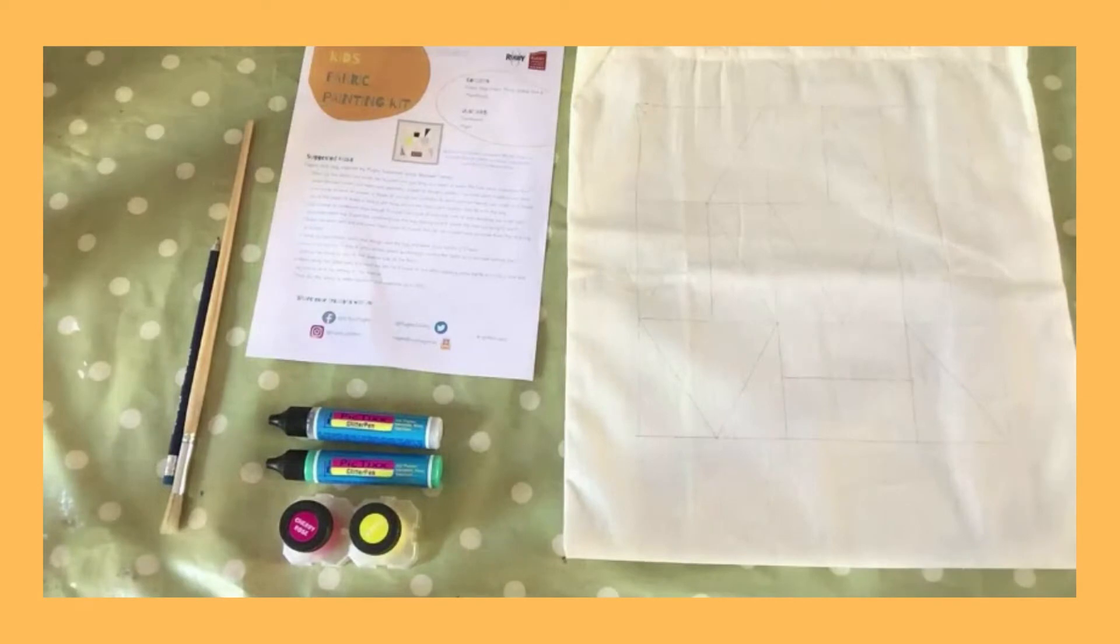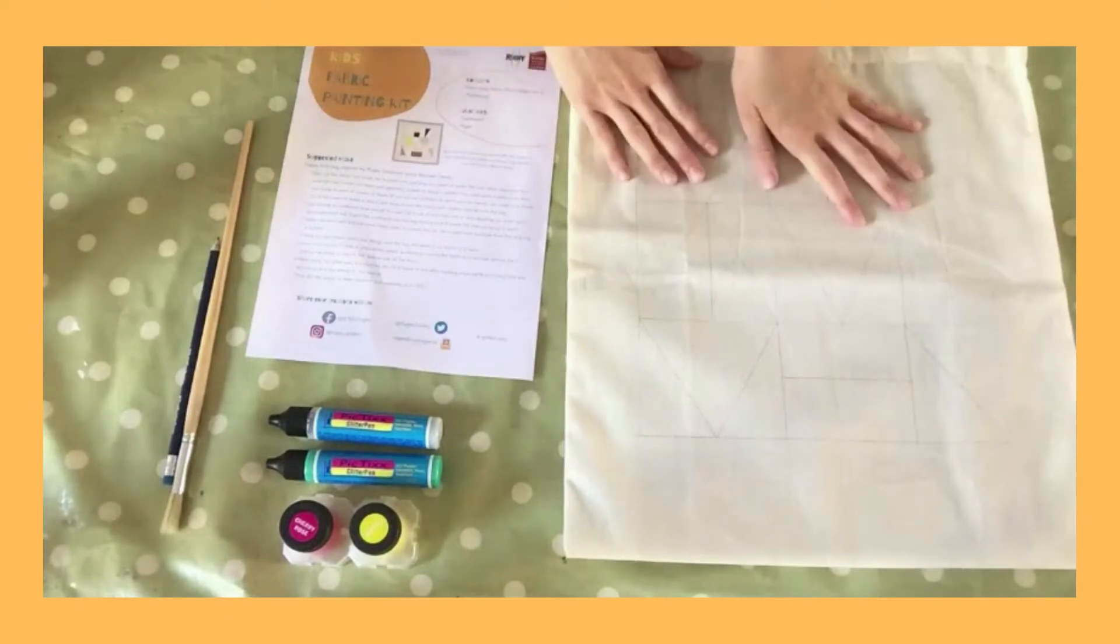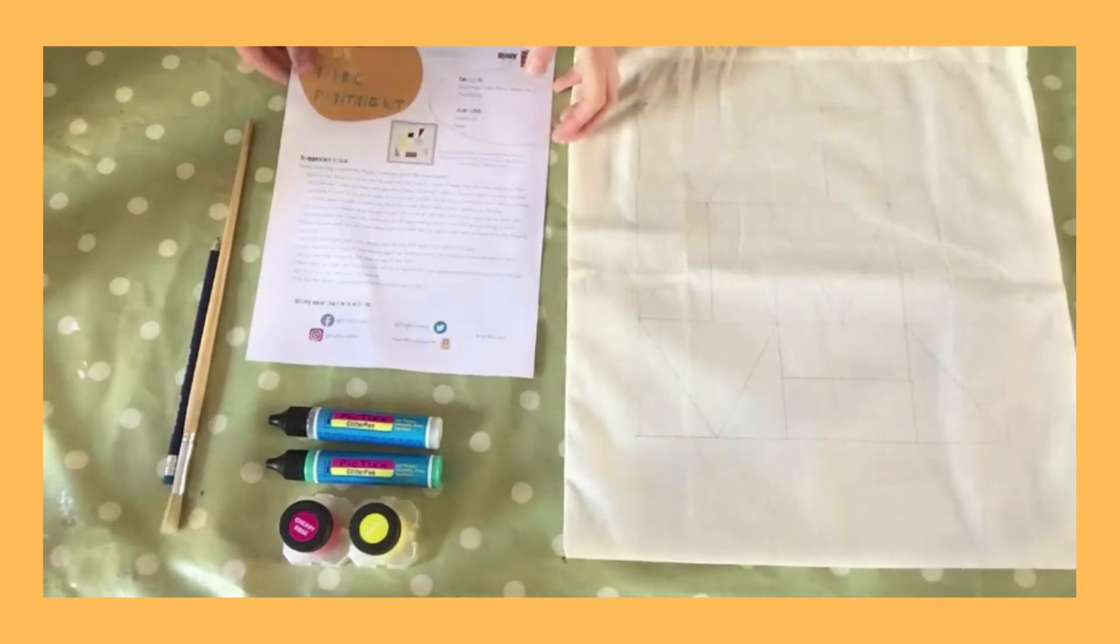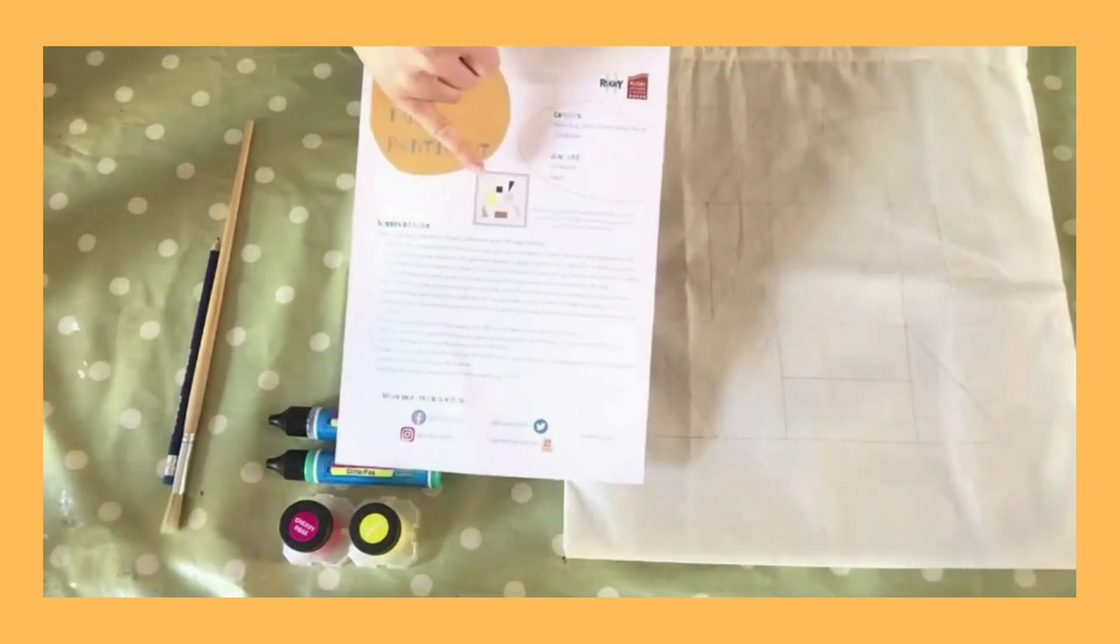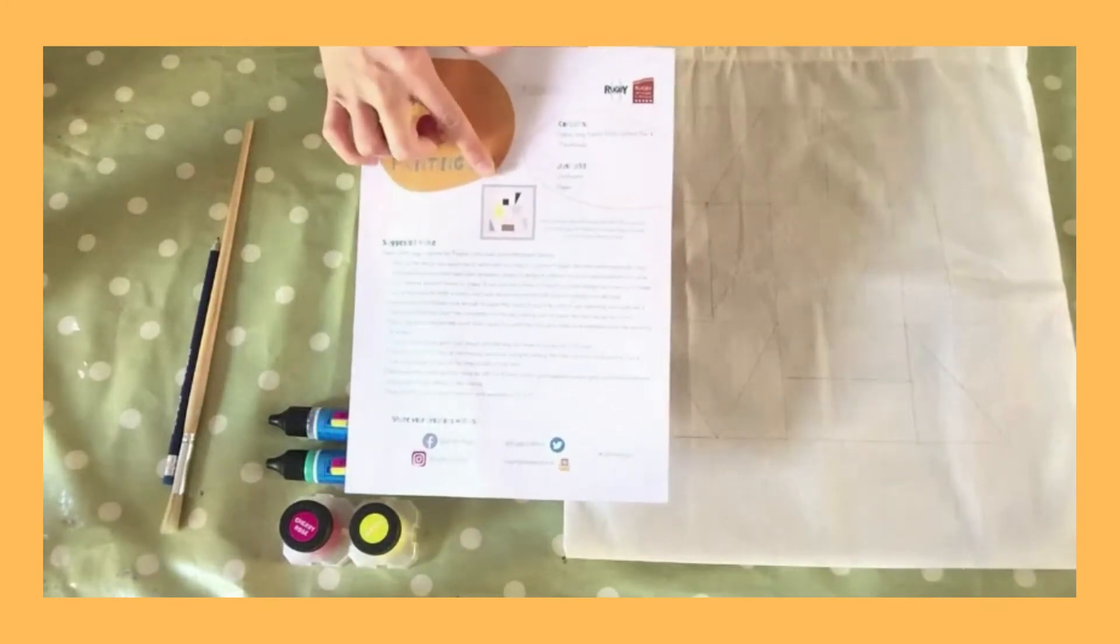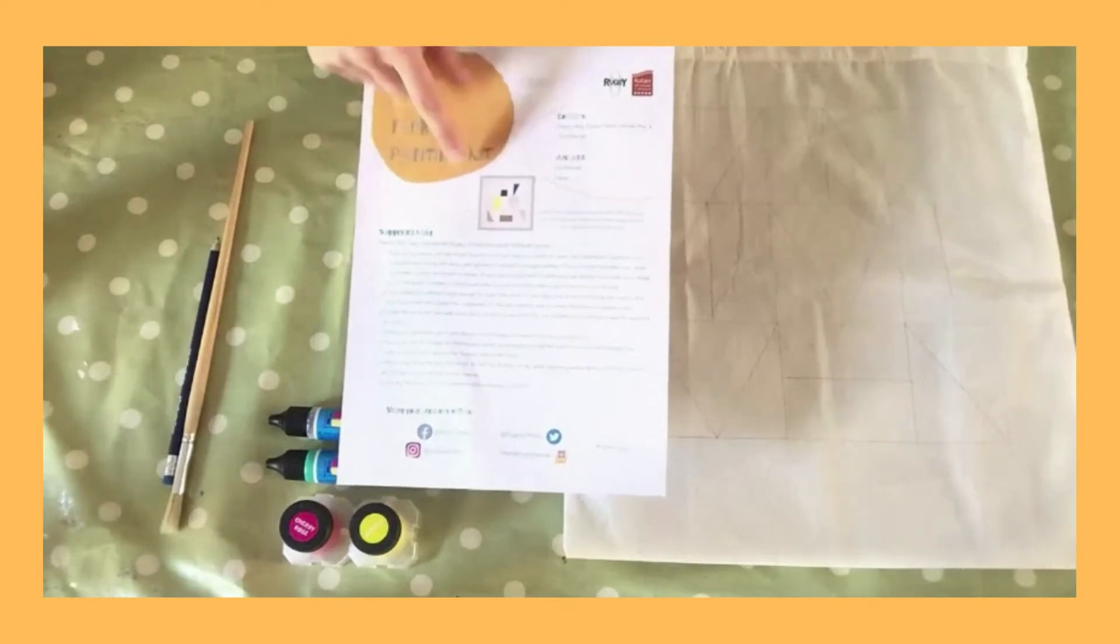Right, the first thing that you want to do is plan the design that you would like to put on to your fabric bag. So in the set of instructions within your kit you'll see that I have been inspired by rugby collection artist Michael Canney geometric composition 1987.